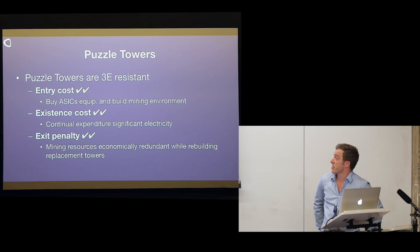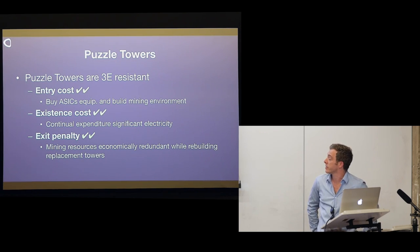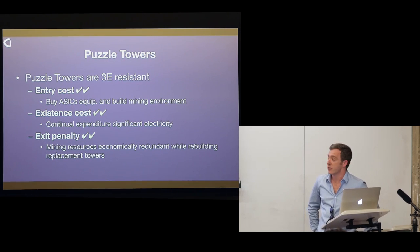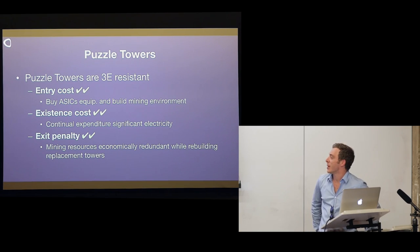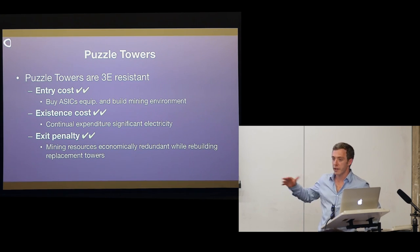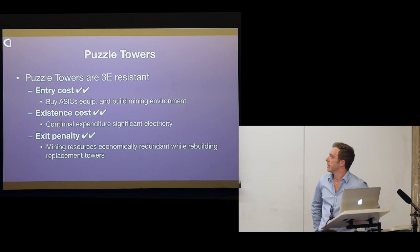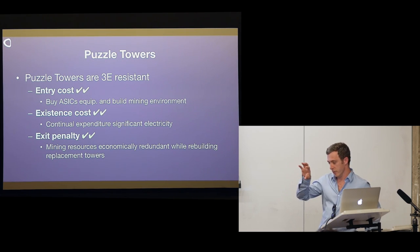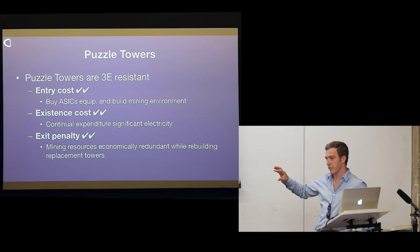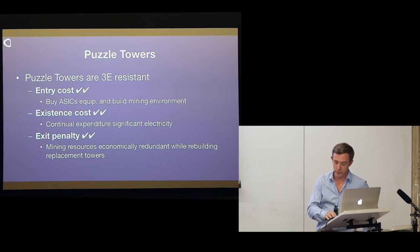Puzzle towers are 3E Sybil resistant. You've got entry cost — you've got to buy the ASICs and build the mining environment. You've got existence cost — continual expenditure of significant electricity, and as soon as you take the electricity away and stop mining, your puzzle tower crumbles. And you've got this exit penalty: if your puzzle tower is kicked out of the network, all of the mining resources are now economically redundant while they're building a new tower. So you can take a Nakamoto chain and build 2.5E and then 3E Sybil-resistant identities.